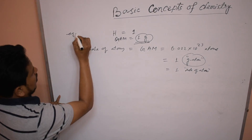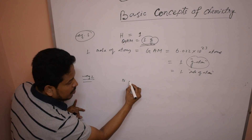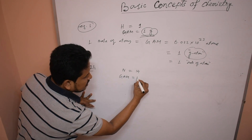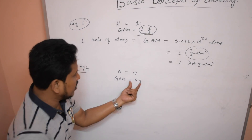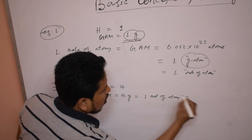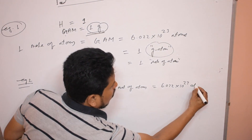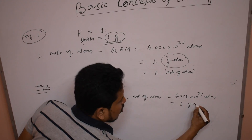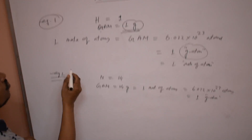That is example number one. Example number two: for the nitrogen atom, what is the atomic mass of nitrogen? Everybody knows — atomic mass of nitrogen is 14. So gram atomic mass of nitrogen is 14 gram; just the gram unit is added to the atomic mass. That means one mole of atoms of nitrogen contains Avogadro's number of atoms of nitrogen, which is called one gram atom of nitrogen. This is the mole concept related to atoms.